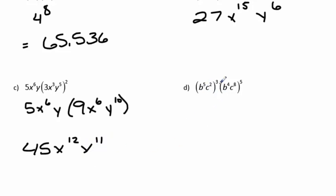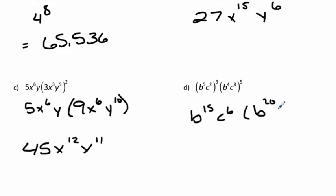In part D, let's first take care of the parentheses. In the first one, we're going to have b to the 15th times c to the 6th. In the second parentheses, we're going to have b to the 20th times c to the 40th. When we combine those all together, we get b to the 35th times c to the 46th.